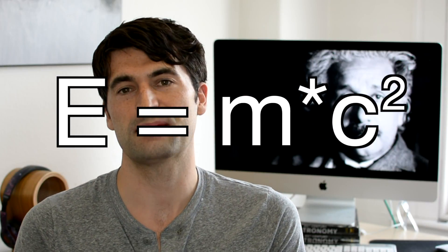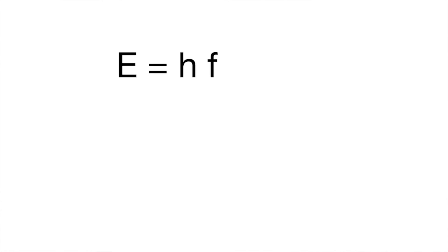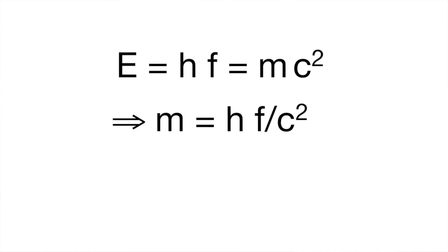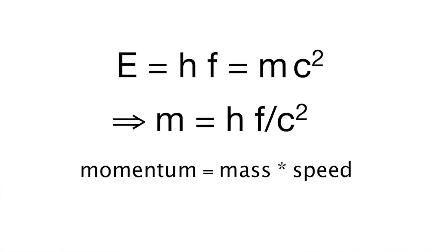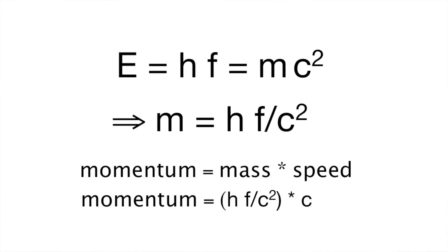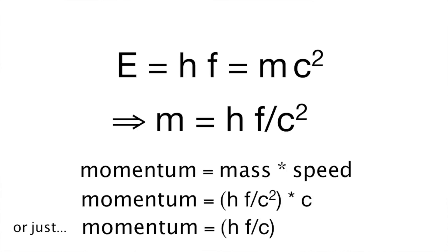So high frequency light, for example blue light, has more energy in it than low frequency light, for example red light. Einstein's famous E equals mc squared equation allows us to write any energy as a relativistic mass, which is the combination of the rest mass and the kinetic energy of a particle. Since the photon has no rest mass, equating its total energy to its relativistic mass gives: frequency times Planck's constant equals mc squared, where m is the relativistic mass. Rearranging gives a relativistic mass of frequency times Planck's constant over the speed of light squared. Since relativistic momentum is defined as relativistic mass multiplied by speed, it turns out that the photon carries a finite amount of momentum given by the frequency of light multiplied by Planck's constant, divided by the speed of light.